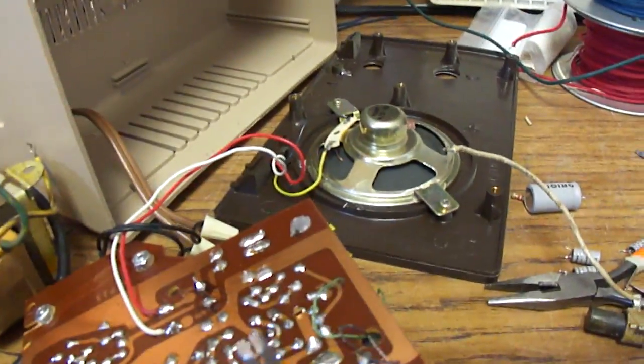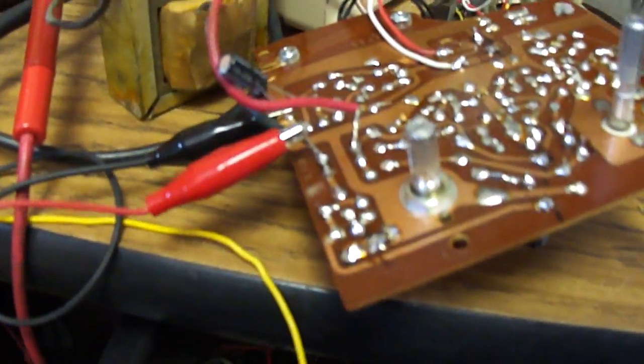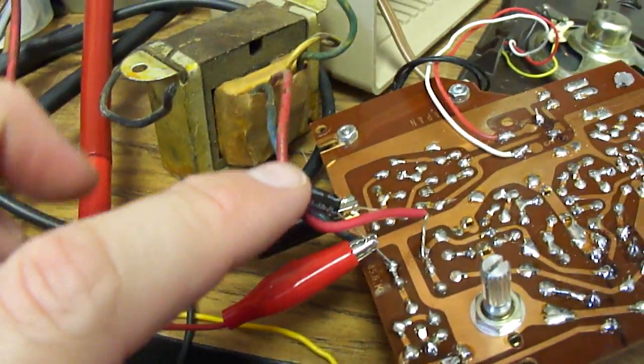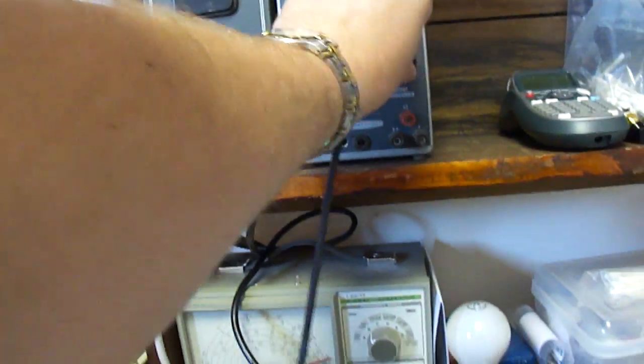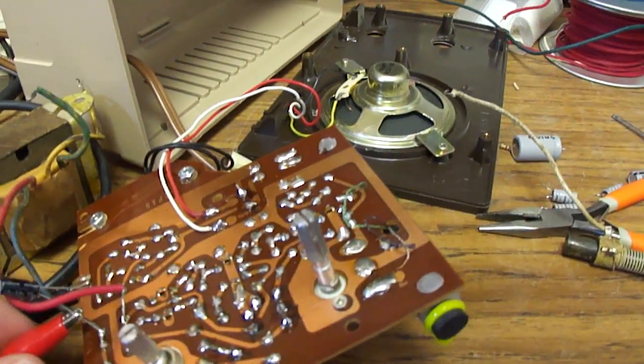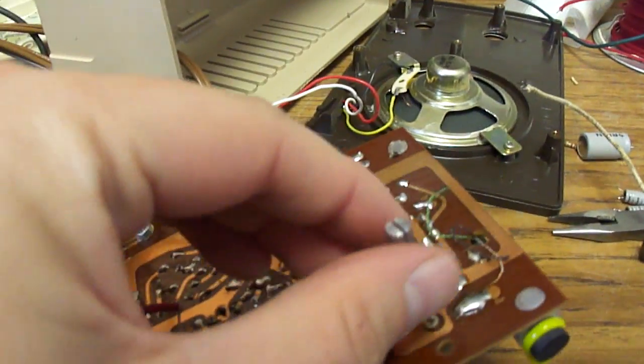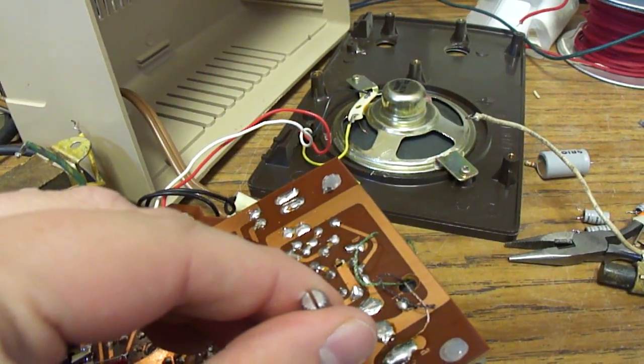So now I've got the circuit functioning here. I'm going to turn off the signal tracer and disconnect it from the circuit. Now I'll just try and tune in some radio stations.